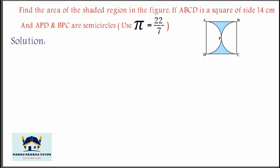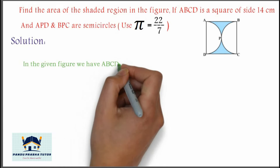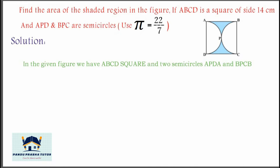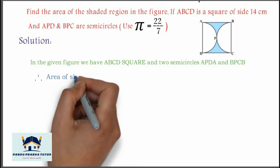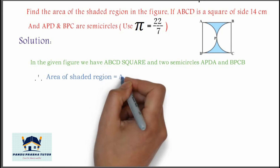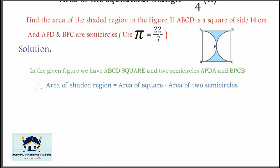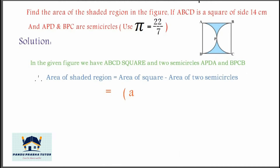Solution: In the given figure, we have ABCD, a square, and two semicircles APD and BPC. Therefore, area of the shaded region is equal to area of the square minus area of the two semicircles.